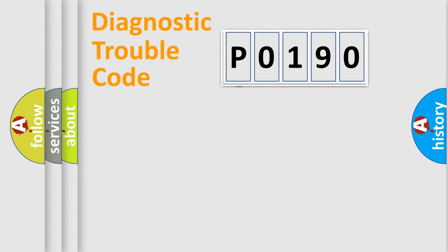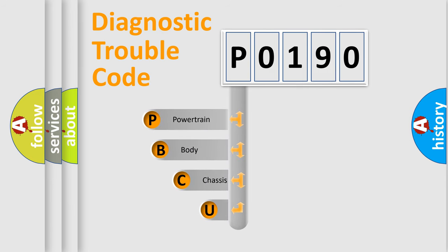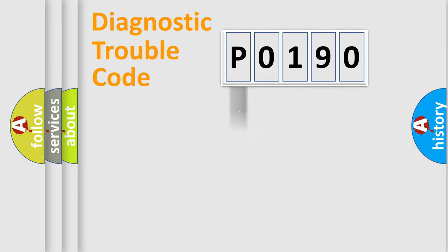First, let's look at the history of diagnostic fault code composition according to the OBD2 protocol, which is unified for all automakers since 2000. We divide the electric system of the automobile into four basic units: Powertrain, Body, Chassis, and Network. This distribution is defined in the first character of the code.